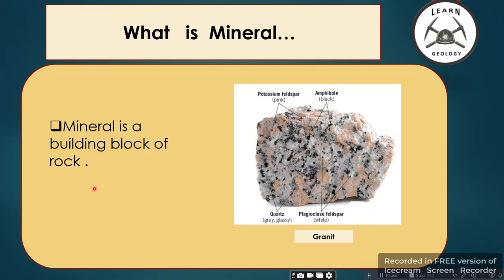So a mineral is a building block of rock. Here is a type of igneous rock named granite, and it is composed of different minerals. The pink is potassium feldspar, black is amphibole, gray glossy is quartz, and white is plagioclase feldspar.